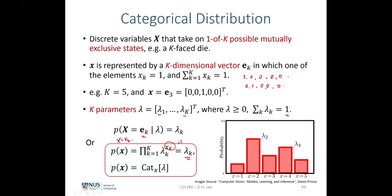The next distribution is the univariate normal distribution, also known as the Gaussian distribution. This describes the probability distribution of a single continuous real-valued random variable X. It is parameterized by two parameters: mu and sigma (or sigma squared), representing the mean and standard deviation (or variance). The distribution is given by the well-known Gaussian equation, where the state of the random variable is a real number, and it can also be written in a shorthand form.